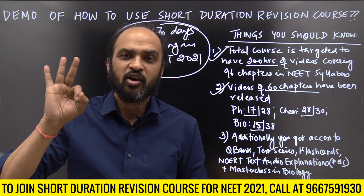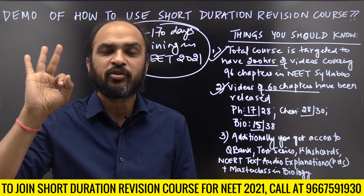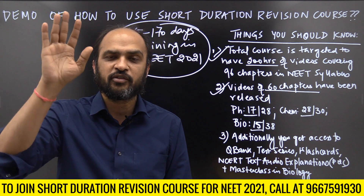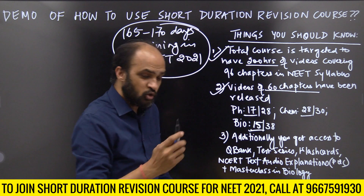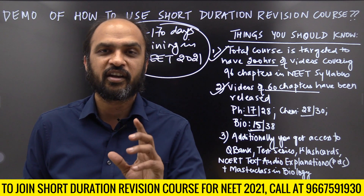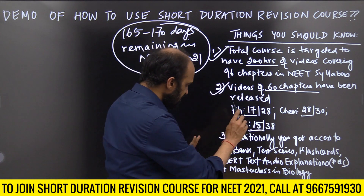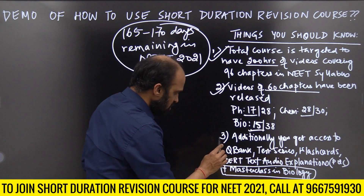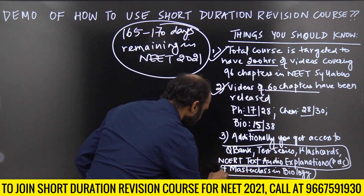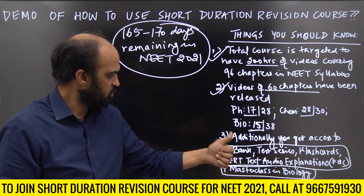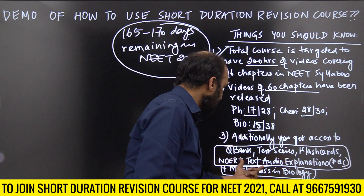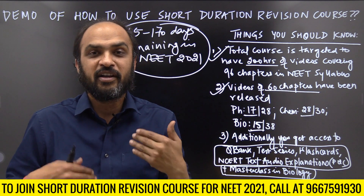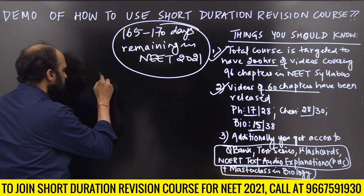In Biology, 15 chapters have been uploaded - the first three chapters of Class 11 and 12, except four chapters: Evolution, Strategies for Enhancement in Food Production, and two chapters in Biotechnology. You can check which links are blue and which are gray to know which chapters are available. Along with this course you also get Masterclass in Biology, the Achievers course question bank, test series, NCRT text audio explanations for Physics and Chemistry, and flashcards.